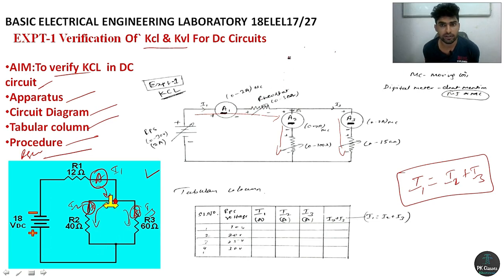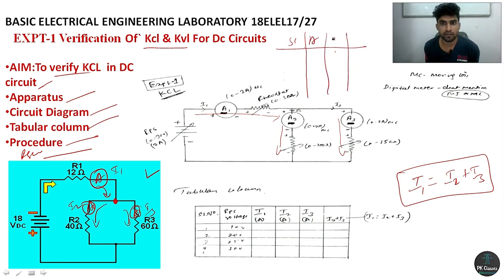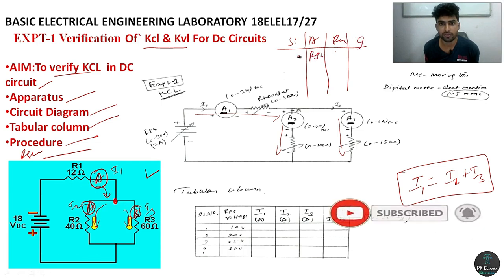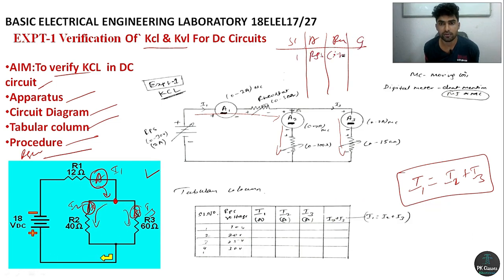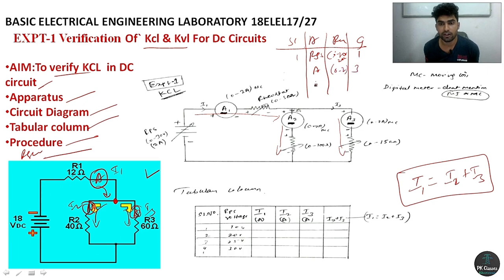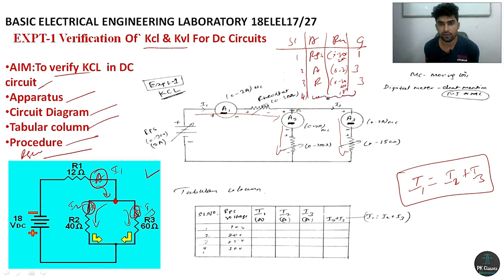Based on this circuit diagram, we will make an apparatus requirement table with serial number, apparatus, range, and quantity. RPS is required with a range of 0 to 30 volts, 2 amps, quantity 1. Ammeters required: 0 to 2 amps, quantity 3. Rheostats also required, quantity 3, with ranges 0 to 50, 100, and 150 ohms. Connecting wires as required.